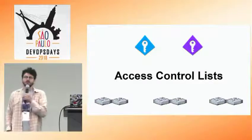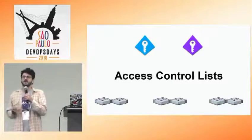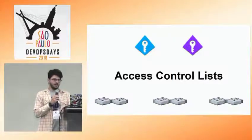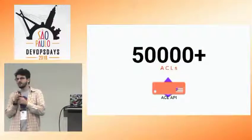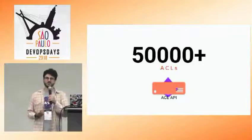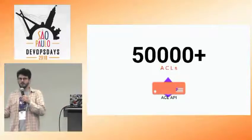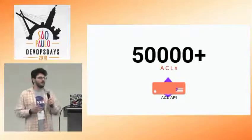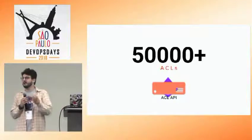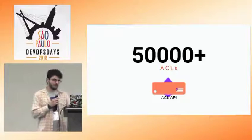O tema da palestra é falar sobre controle de acesso — as access control lists que tipicamente são configuradas nos switches, nos topos de rack, nos Leafs e nos Spines. O que a gente tem hoje na Globo.com? São mais de 50 mil ACLs ao longo do datacenter. Para controlar isso, a gente tem um serviço interno chamado ACL API, que guarda todas as ACLs no banco e, quando alguém pede para liberar acesso de uma aplicação para outra, é a ACL API que mantém e pede para alguém configurar essas ACLs.